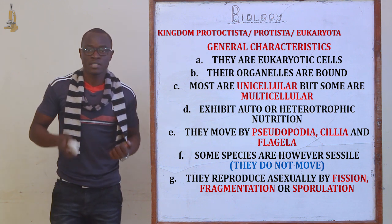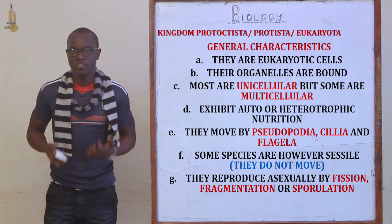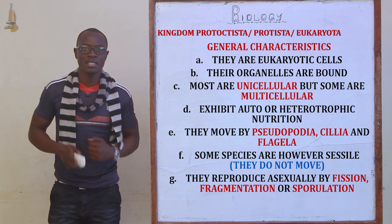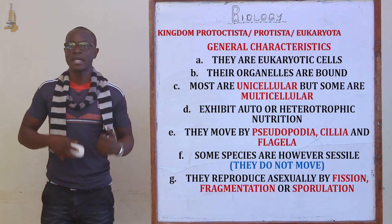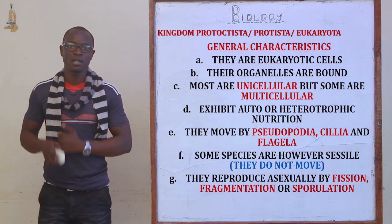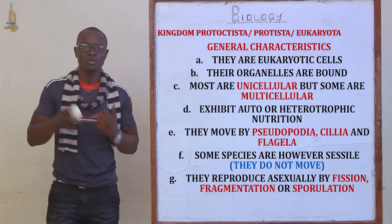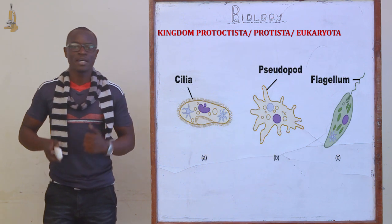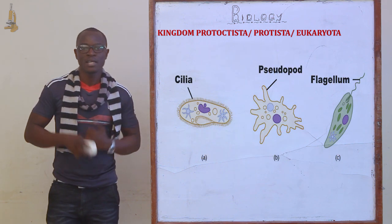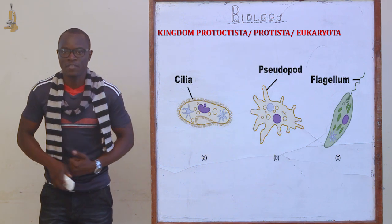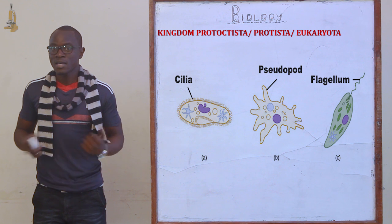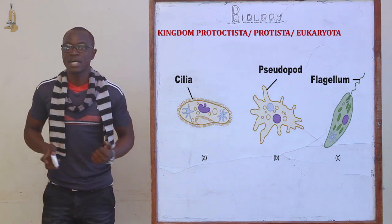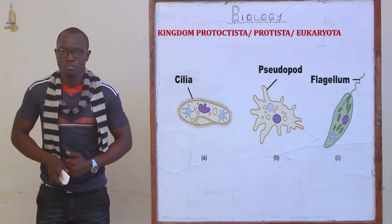They are also unicellular, and some of them are multicellular. The nutrition for these organisms is basically autotrophic or heterotrophic. They mainly move by pseudopodia, cilia, and flagella. Some of them are however sessile, meaning that they cannot move.